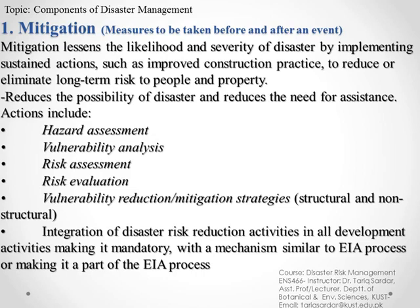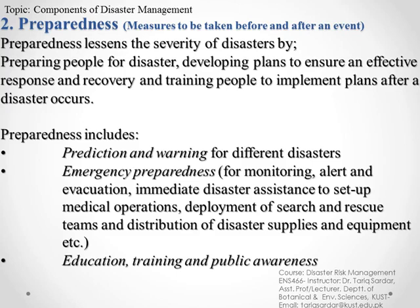The last key element of mitigation is the integration of disaster risk reduction activities into all development activities, making it mandatory. This simply means that, similar to Environmental Impact Assessment during any developmental phase, these processes should be a mandatory step. For example, if you are going to construct a road or building, you must first evaluate and assess how vulnerable that project area is to any natural disaster, enabling possible reduction of future disaster risk.